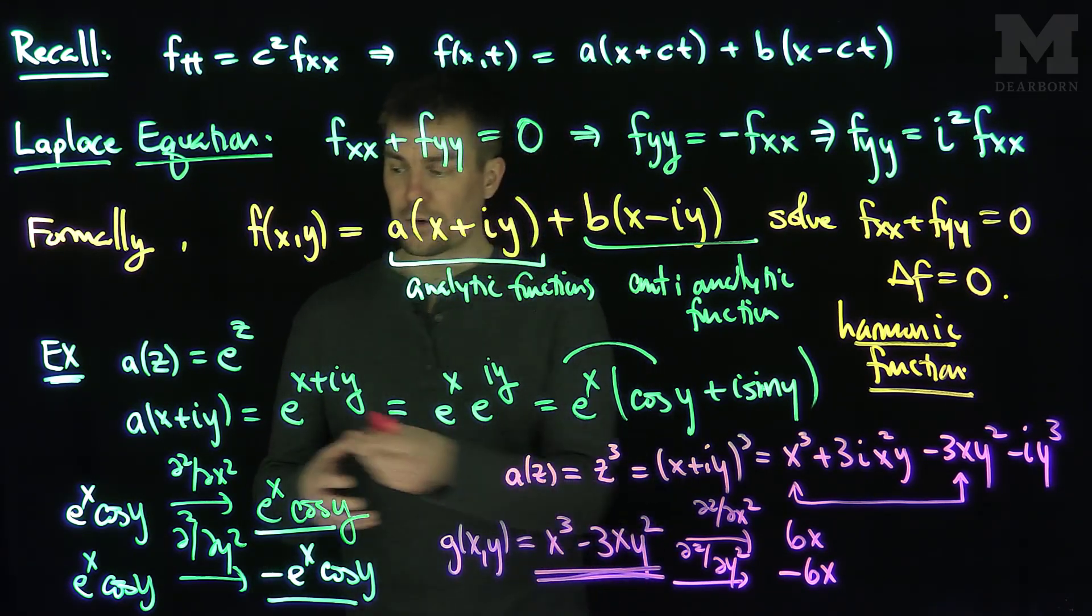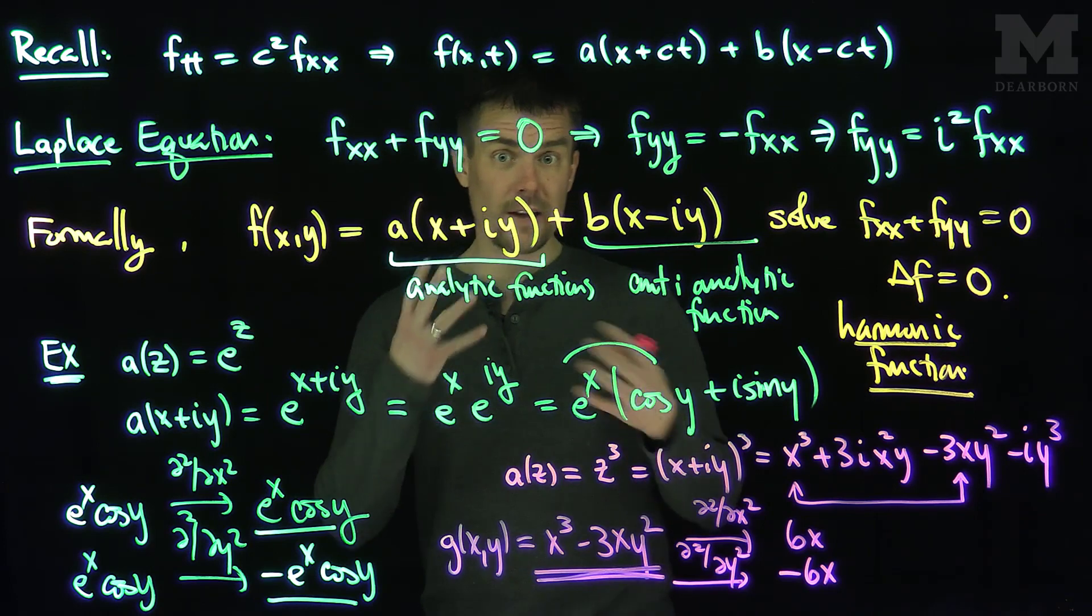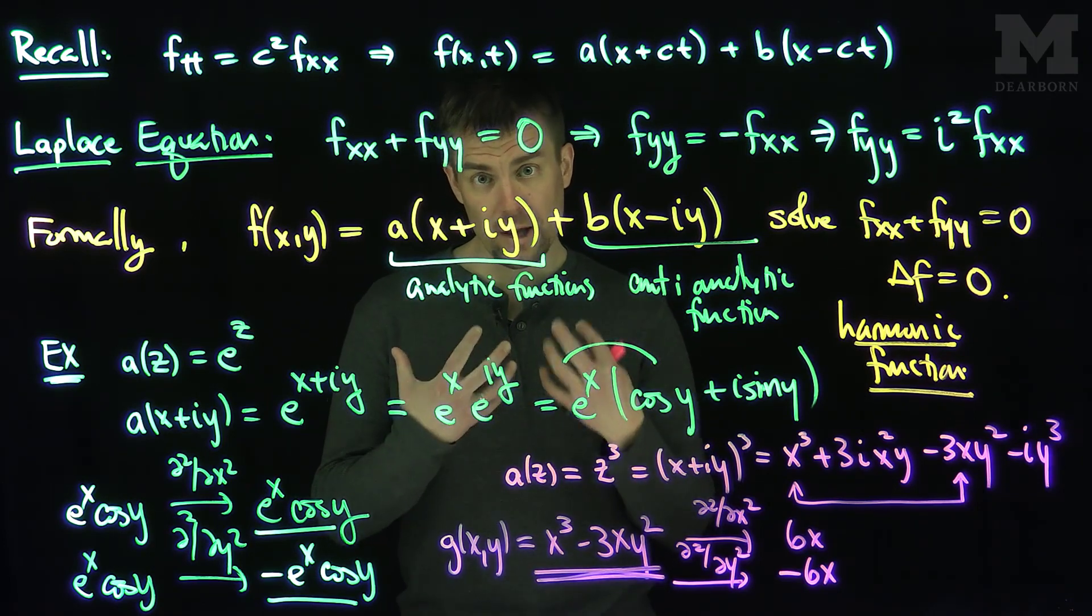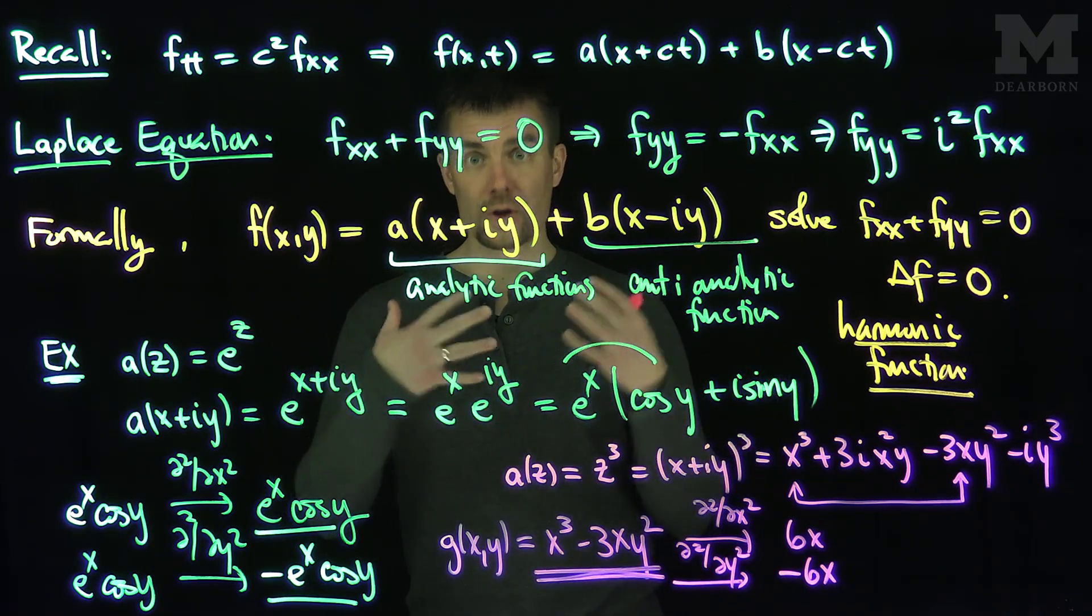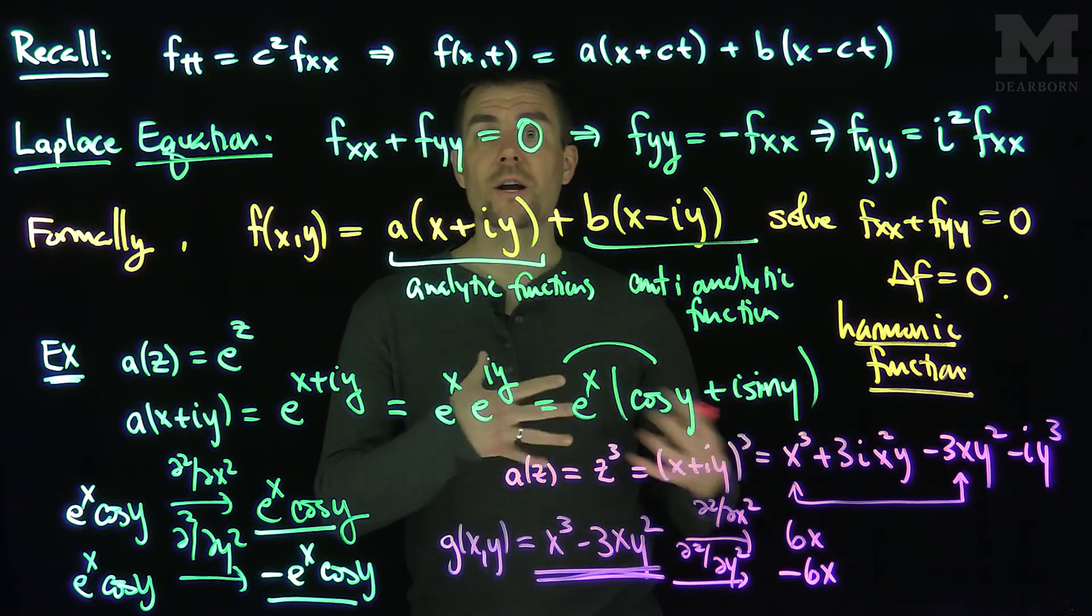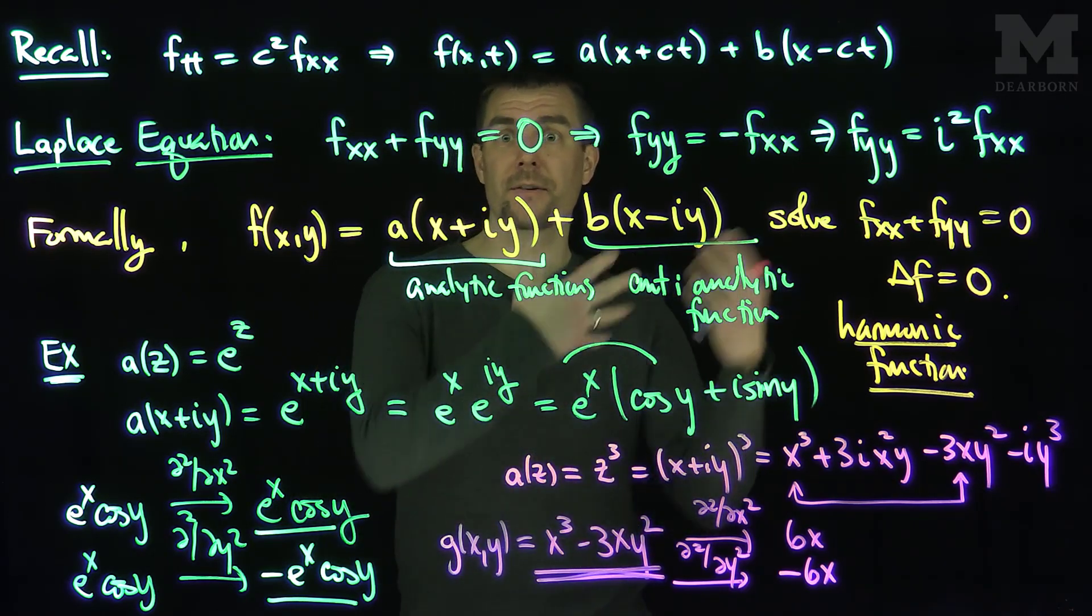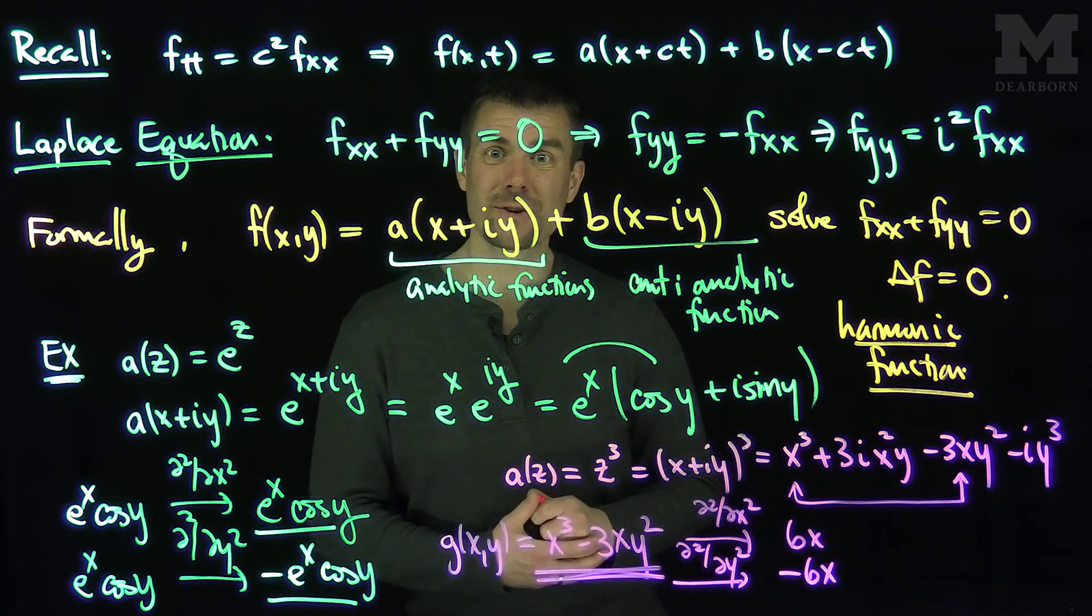So I would encourage you to pick some functions a(z), and plug in x plus iy, algebraically manipulate them, use Euler's formula, or use the power of i trick, and see if you can construct many more examples of harmonic functions using the method of characteristics as this is called. Thank you very much.